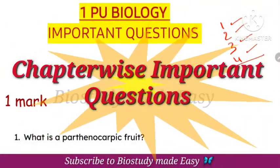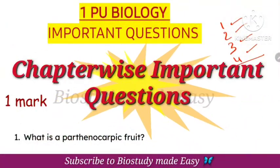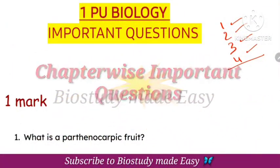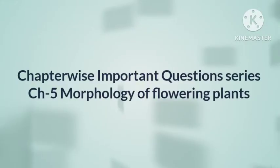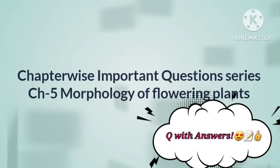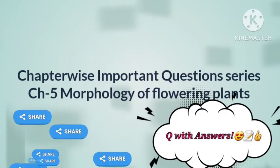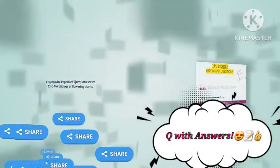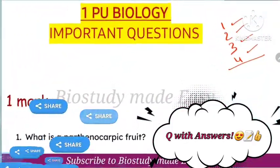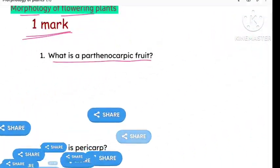In this video, I am going to explain the first PUC biology chapter number 5, Morphology of Flowering Plants, with answers. I will explain the answers to you, so be ready with your pen and paper so that you can note the answers along with the video.